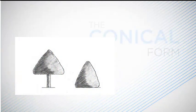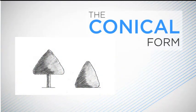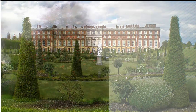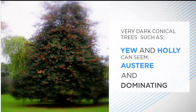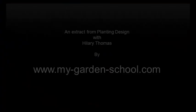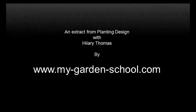The conical form is a fairly formal shape, and is seen in many of our conifers. When the form occurs naturally, it is taller than it is wide. The conical form is more stable and subtle than a columnar shape, and can be used as an accent plant in a composition. Very dark conical trees, such as yew and holly, can seem rather austere and dominating.